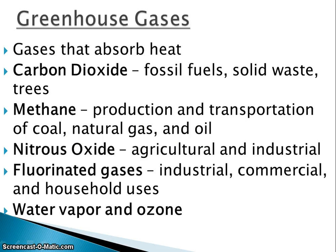Greenhouse gases are gases that absorb heat. They come from the burning of fossil fuels, releasing solid waste, and the cutting down of trees — which means trees are not taking in carbon dioxide to go through the process of photosynthesis. Methane is a greenhouse gas from the production and transportation of coal, natural gas, and oil. Nitrous oxide comes from agricultural and industrial factories.